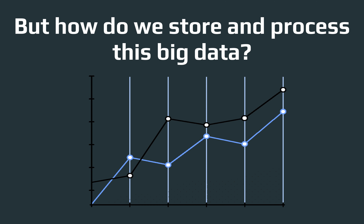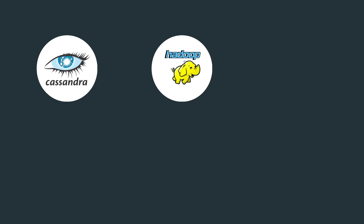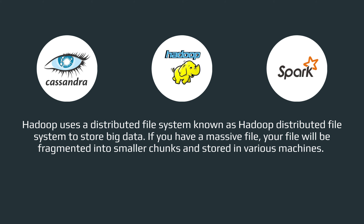But how do we store and process this big data? We have numerous frameworks to do this task, like Cassandra, Hadoop, and Spark. Let's look at Hadoop first. Hadoop uses a distributed file system known as Hadoop Distributed File System (HDFS) to store big data.